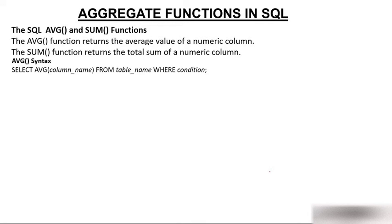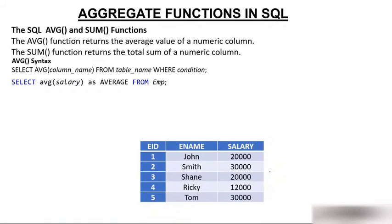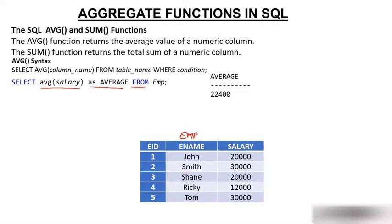The syntax is the same — only in place of MIN, MAX, or COUNT you put AVG. The table name is M. We are selecting AVG(salary) AS average FROM M. The method of calculating average: sum all the salaries and divide by 5. You get approximately 22,400.